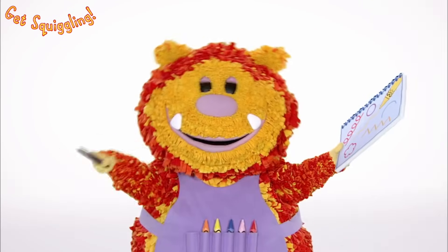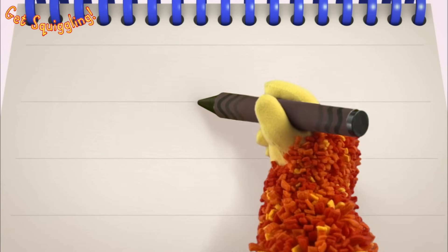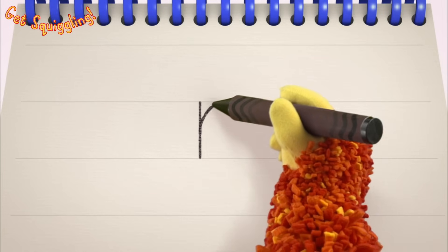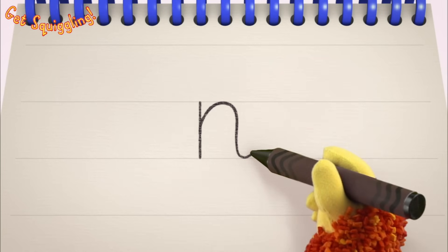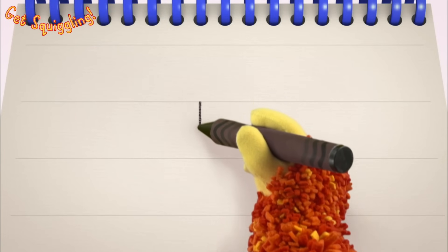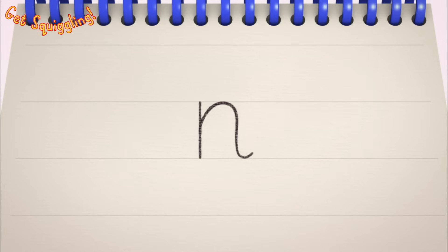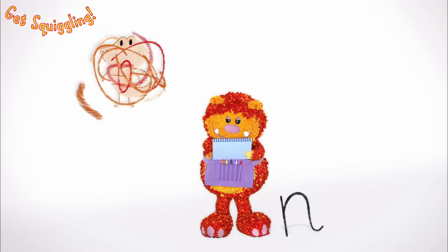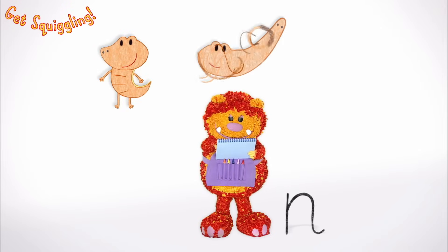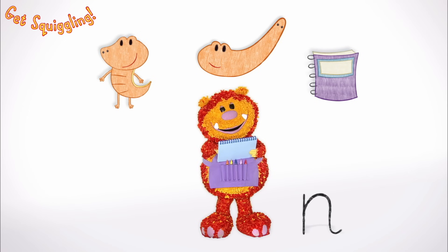Have you got your squiggle pads and squiggle sticks ready? Let's get squiggling! Holding your squiggle stick like this, move it down, up, over, down and flick — the letter N! Let's squiggle it again: go down, up, over, down and flick — the letter N! Shall we squiggle some things that start with the letter N? A newt and a notebook — they all begin with the letter N!